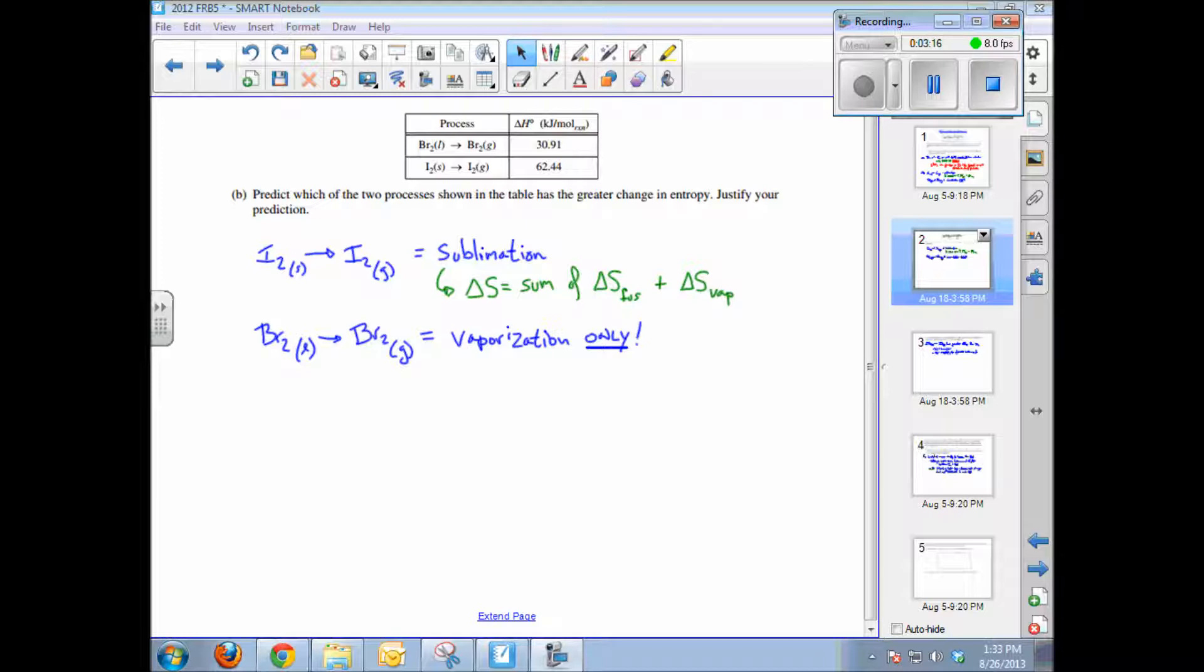So the delta S would be the sum of again, two phase changes from solid to liquid and liquid to gas, whereas for bromine, the delta S, the entropy change, would just be for vaporization from liquid to a gas. So again, same answer and virtually the same justification.